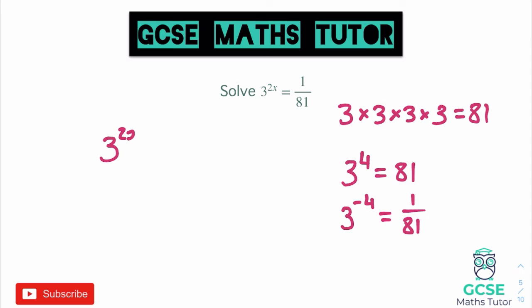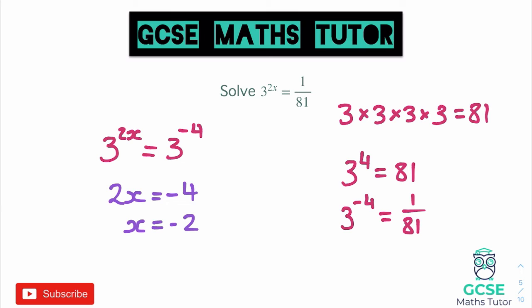Now we can set them equal to each other: 3 to the power of 2x equals 3 to the power of negative 4. We can now almost forget about the base numbers, because we know that the power of 2x has to equal negative 4. So we write 2x equals negative 4 and solve from there. 2 times the number is negative 4, so dividing by 2 gives x equals negative 2. That is the power that ensures we get 1 over 81.